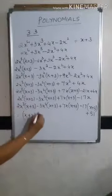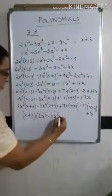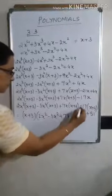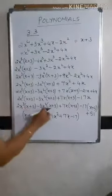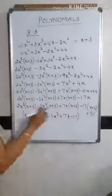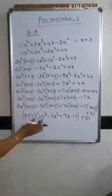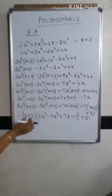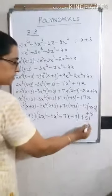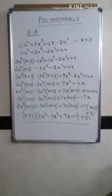Taking x plus 3 as common from all four terms, we are left with: 2x³ minus 3x² plus 7x minus 17. Then plus 51 remains as the remainder. So the expression is: (x plus 3)(2x³ minus 3x² plus 7x minus 17) plus 51. This is divisor times quotient plus remainder. This is how you do the linear division of a polynomial expression.